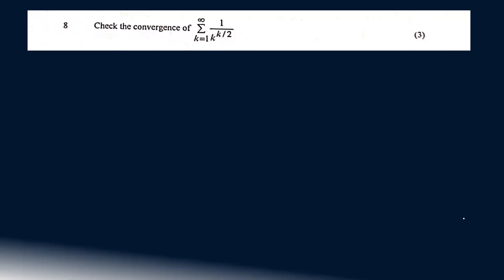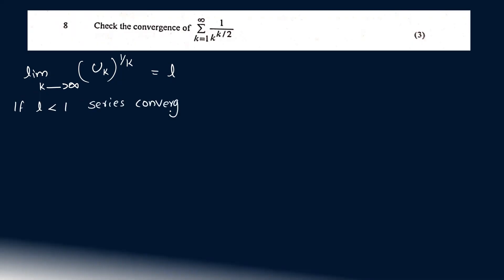Next question: check the convergence of the summation k equal to 1 to infinity of 1 over k raised to k/2. We apply the Root Test: limit as k tends to infinity of u_k all raised to 1/k equals L. If L is less than 1, the series converges. If L is greater than 1, the series diverges.